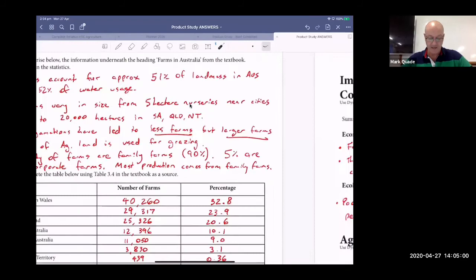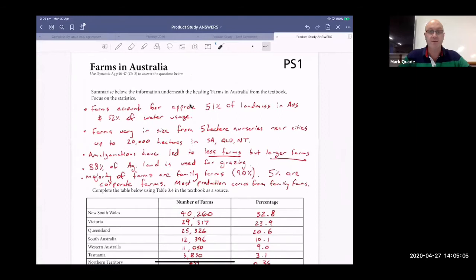So farms in Australia, straight out of your textbook again. Farms account for 51% of the land mass in Australia and 52% of the water usage. Farms vary in size from five hectare nurseries near cities up to 20,000 hectares in South Australia, Queensland, Northern Territory and bigger than that. Amalgamations, so that's when farms accumulate the smaller farms around them. That means we have less farms, but they're bigger. 88% of ag land is used for grazing. Think of all that Western New South Wales, inland Australia, all of that is not suitable due to rainfall for cropping, so it's all grazing. Majority of the farms are family farms, 95%, and 5% of corporate farms. Most production comes from family farms.